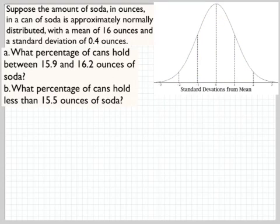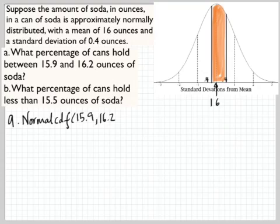So let's remember how to do normal CDF on our calculator. A couple quick questions. What percentage of cans hold between 15.9 and 16.2 ounces of soda? So if I picture this, if I draw that on the graph, remember that 16 is here in the middle, each of these bands is 0.4 wide. So 15.9 is just a bit below 16 right there. 16.2 is halfway between 0 and 1 standard deviations away. It's a half standard deviation up. So I'm looking for the area between those two lines.